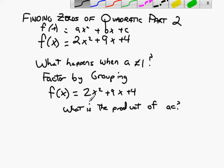In other words, we're going to take the 2, multiply it by the 4, and we see that the product is 8. So we're going to ask the same two questions that we asked in the previous video. What two numbers multiply together? Now, instead of C, it's AC. What two numbers will multiply together to give you 8? And when you add those same two numbers together, give you the middle term numeric coefficient.